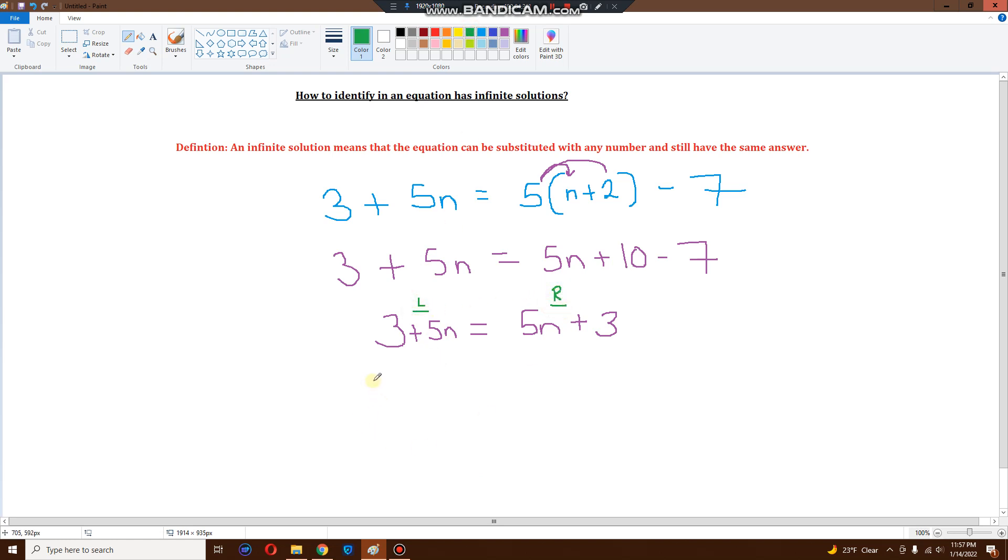Left side. The n has to stay on the left. So 5n is good. But this 5n is on the right. So it jumps across the equal sign and becomes minus 5n. Everything else stays on the right side. So positive 3 is good. This positive 3 is on the left. Let's jump across to the right side. It becomes minus 3.